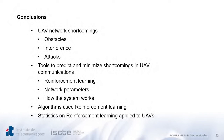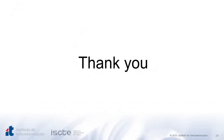In this presentation, we saw some UAV network shortcomings — obstacles, interference, and attacks. We saw tools to predict and minimize shortcomings in UAV communications, some reinforcement learning based and some network parameter based. We saw how a system works based on these two approaches, some reinforcement learning algorithms, and statistics on reinforcement learning applied to UAVs. Thank you for your attention.